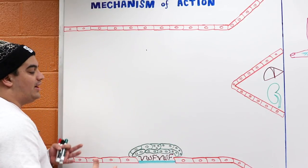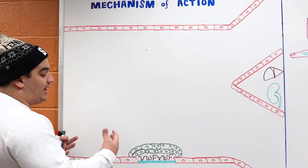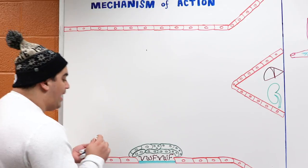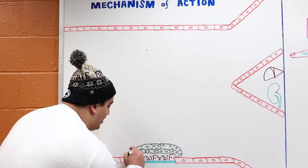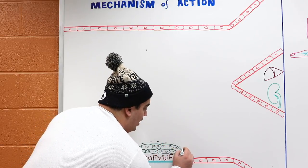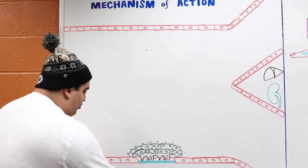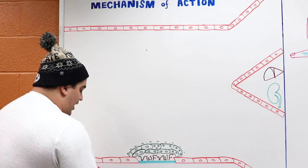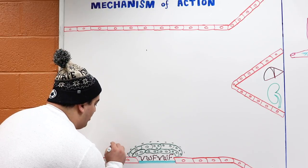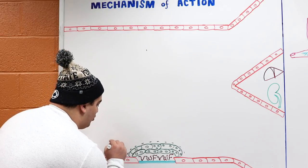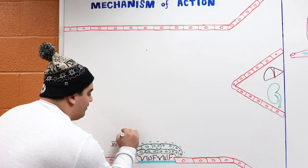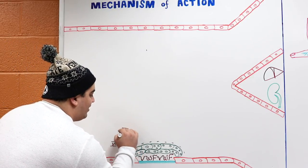Once the platelets become activated, they develop a negatively charged surface. That negatively charged surface is super attractive for certain types of coagulation proteins. One of the big ones is factor 12. When factor 12 reacts with this negatively charged surface, it becomes activated.